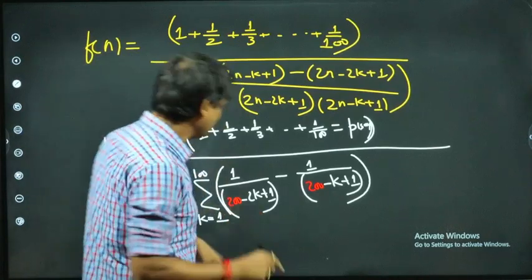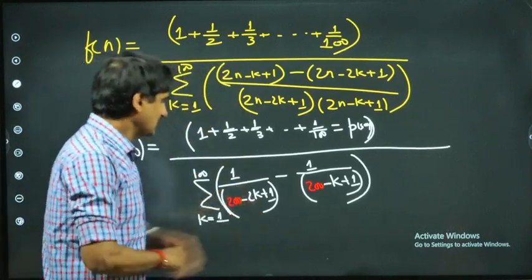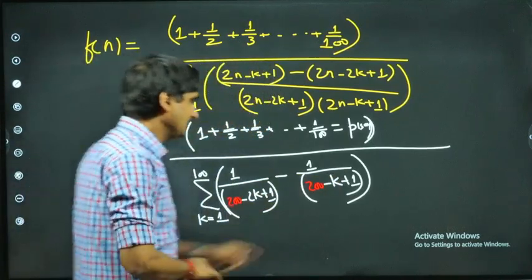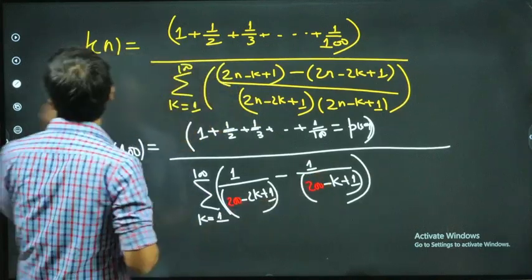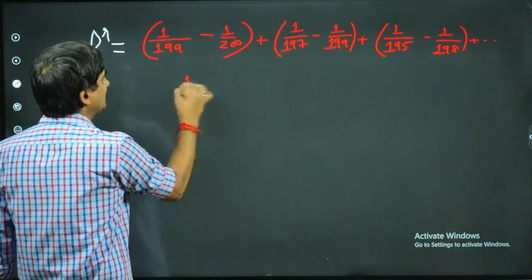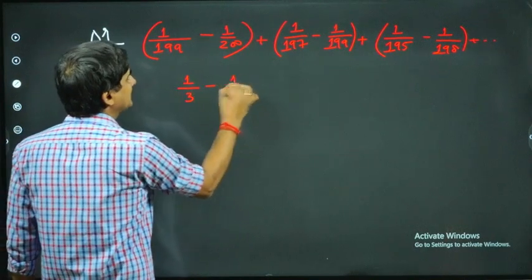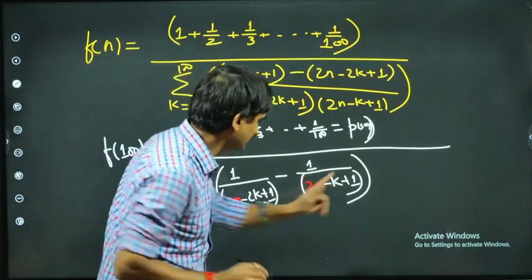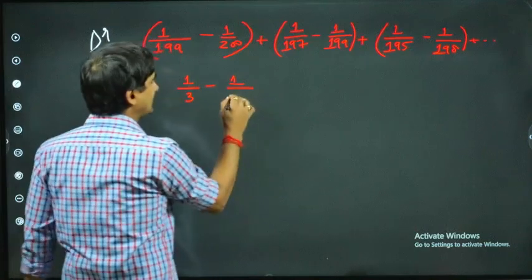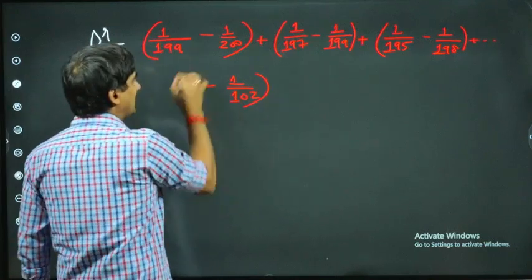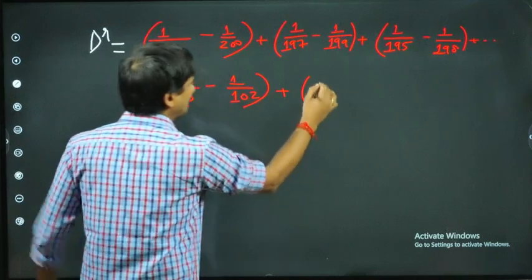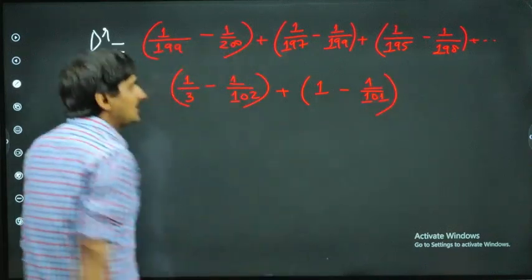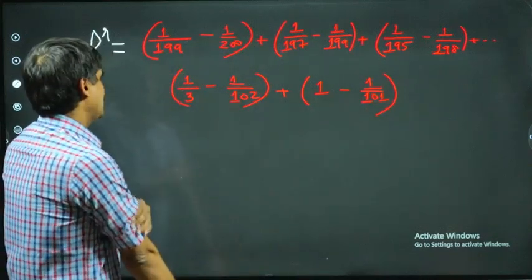For k = 99: it gives 1/3 minus 1/102. For k = 100: it gives 1/1 minus 1/101. Now let's collect all the positive and negative terms and analyze what we have.